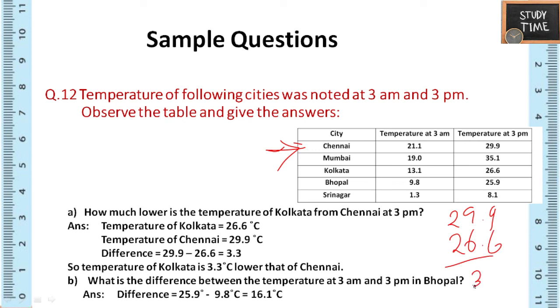So the answer is 3.3. What is the difference between temperature at 3 a.m. and 3 p.m. in Bhopal? So 25.9 you have to write first and then subtract it with 9.8. The answer is 16.1.